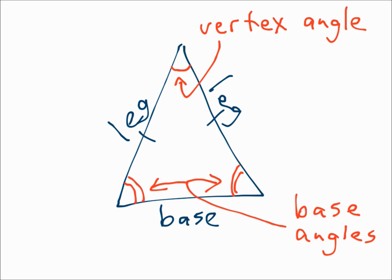The base angles are congruent — that's one of the properties of an isosceles triangle. One way to consider that is that the angles opposite the congruent sides are the congruent angles. Consider the sides that are congruent, draw to the other side of the triangle, and those angles are the congruent ones.